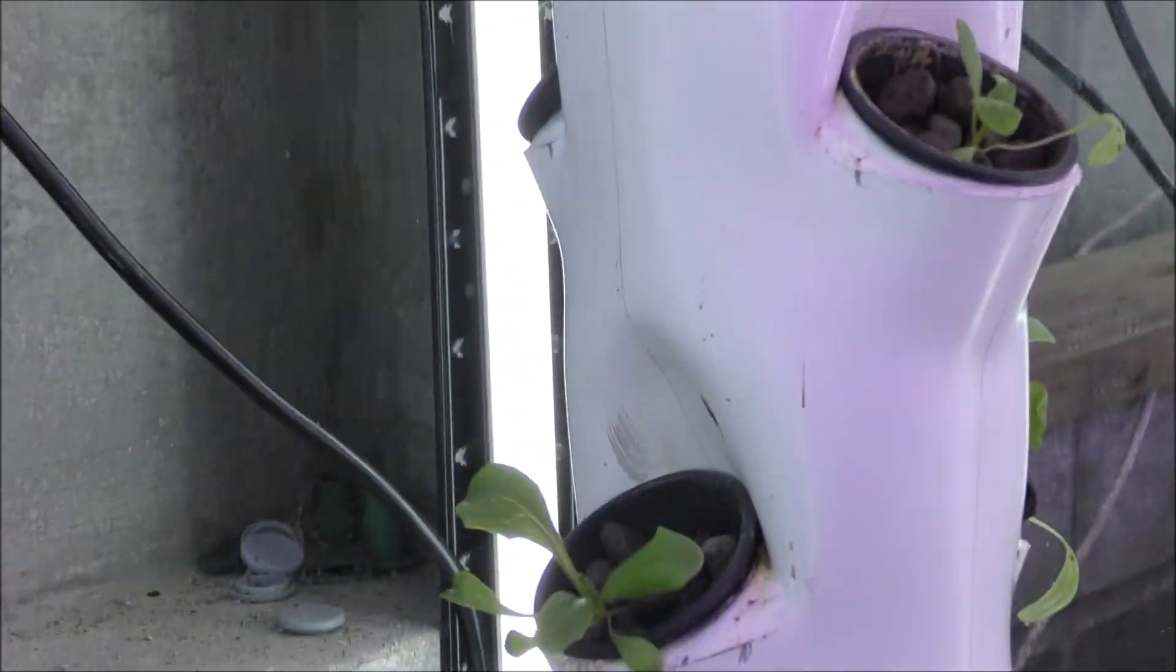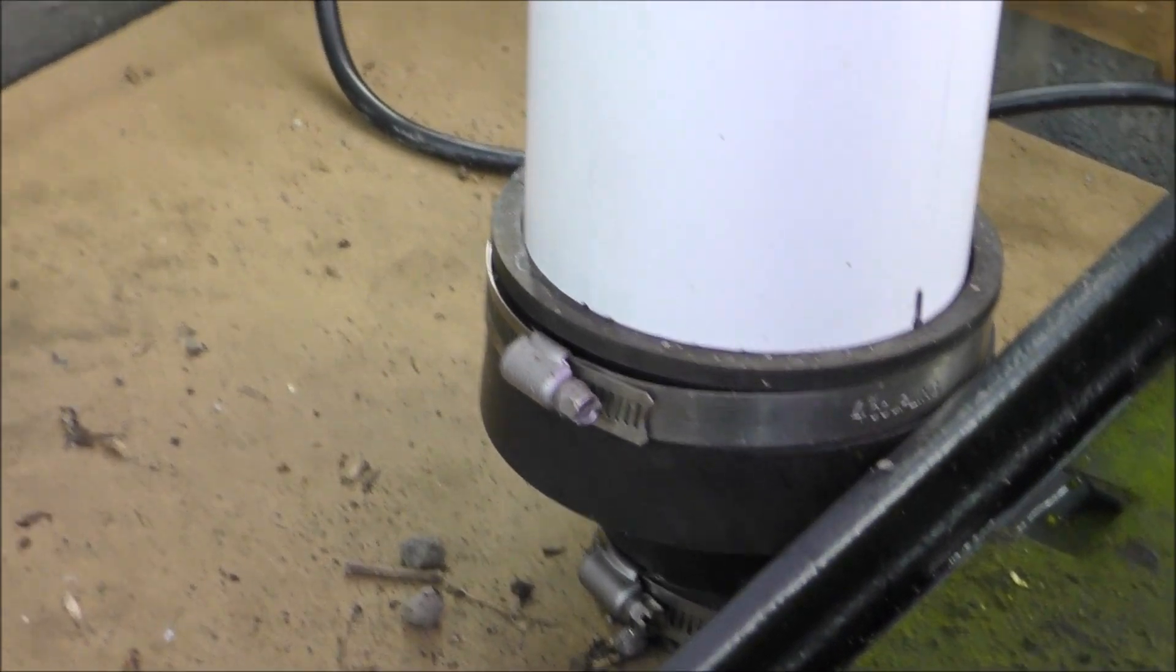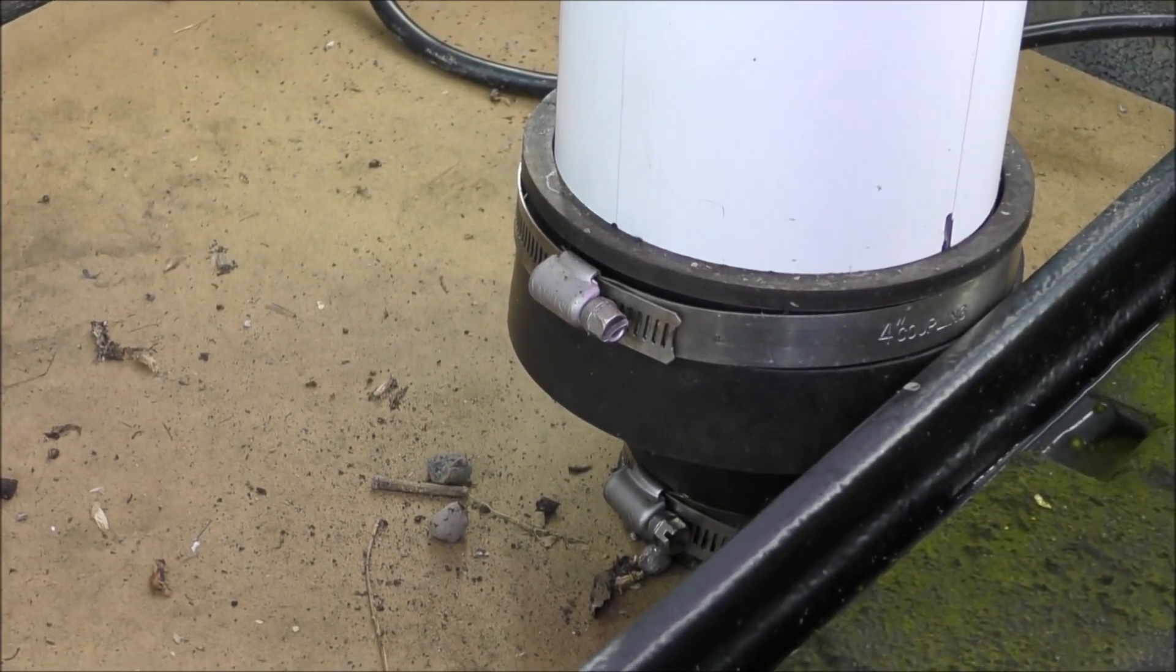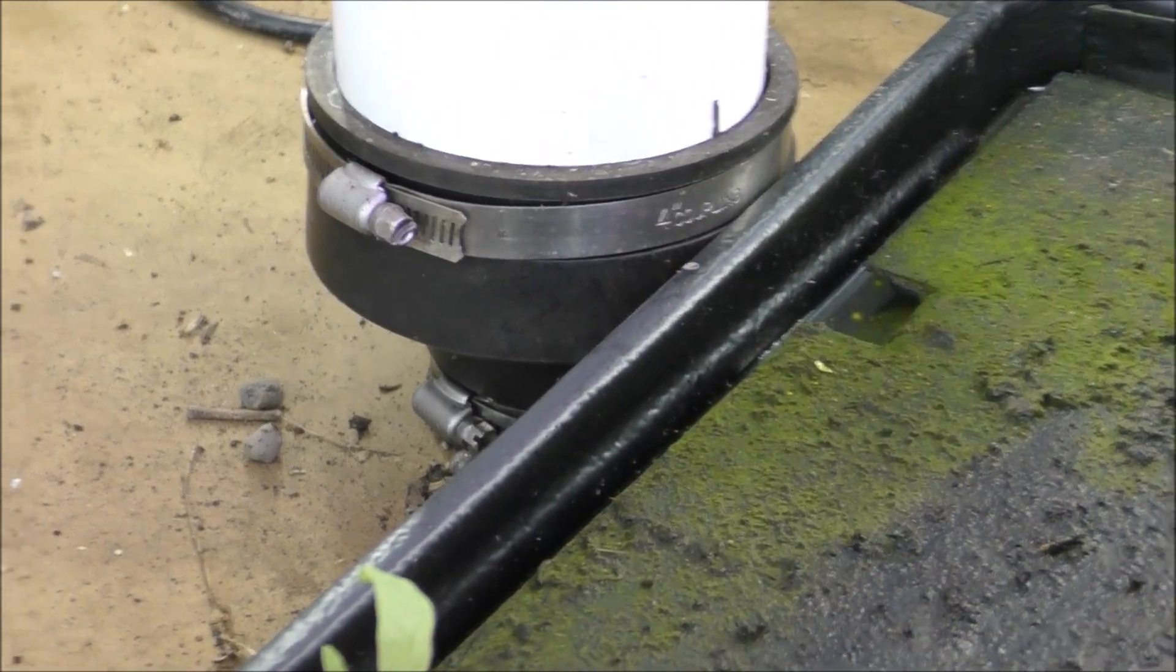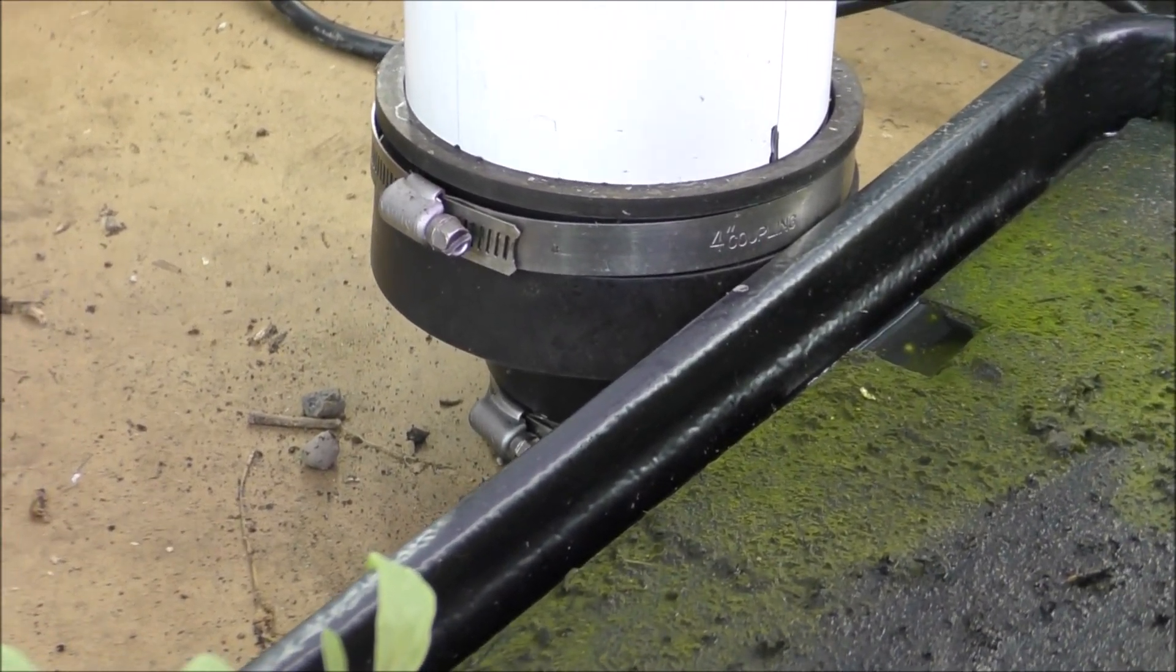Now where the pipe comes down, it feeds into a four inch rubbery socket which is a reducer taking it down to two inches. And then from there I go into two inch solvent pipe and that goes back to the tank.